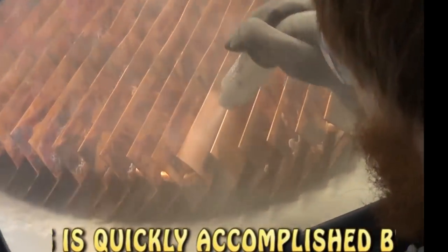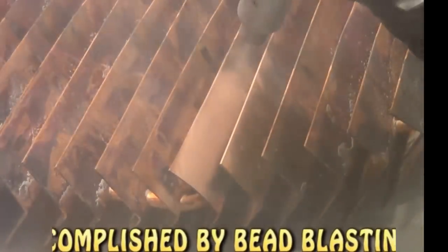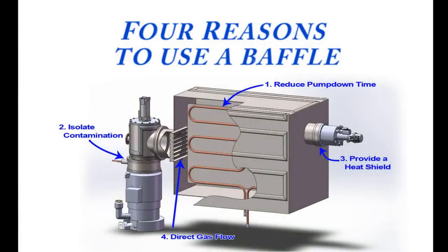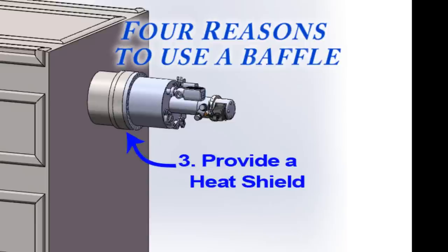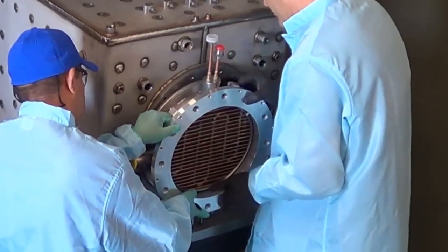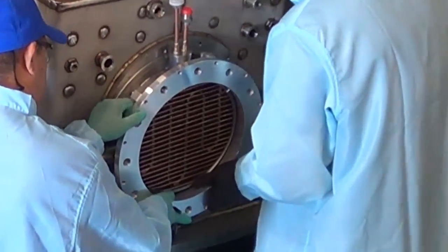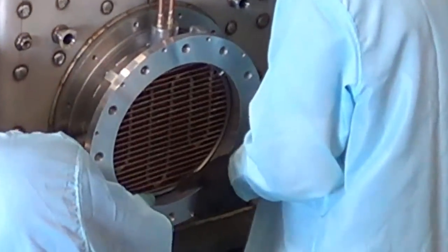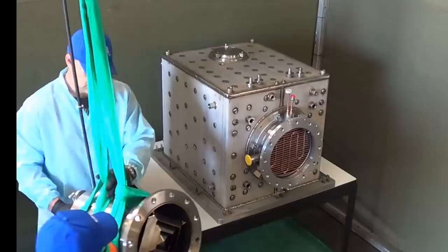The third common use of a baffle is to provide a heat shield. Many vacuum components such as cryo pumps do not work effectively when exposed to the high temperatures commonly found in vacuum processes. A chilled baffle placed in front of a cryo pump will block radiation and allow the pump to work efficiently.